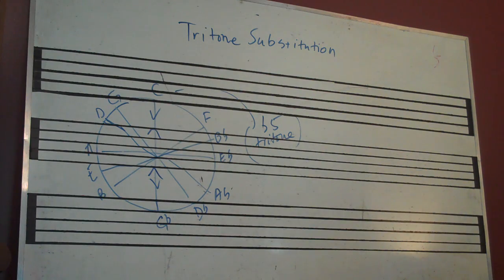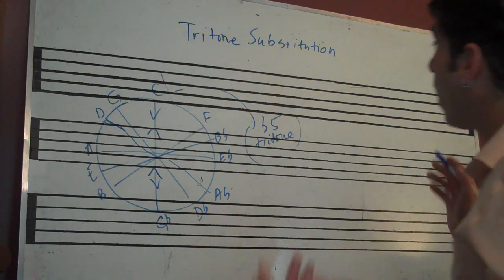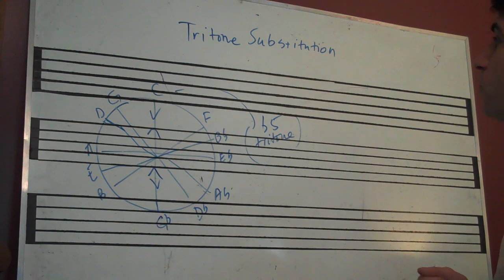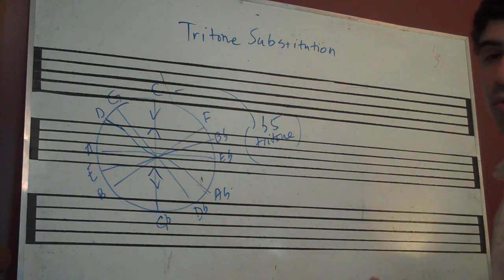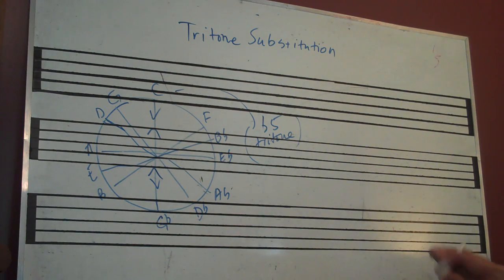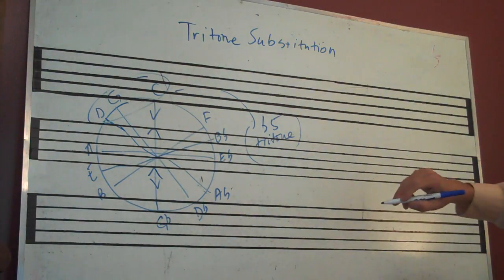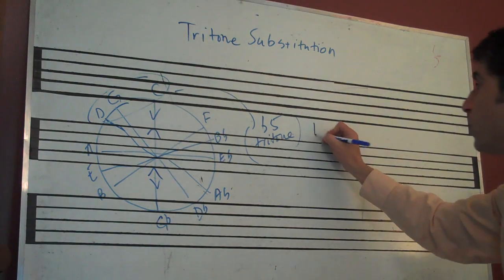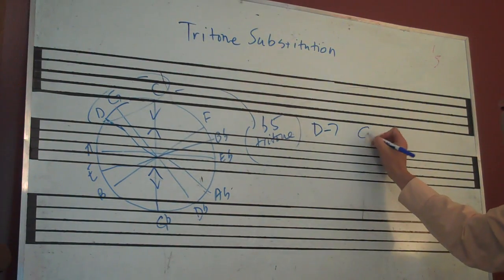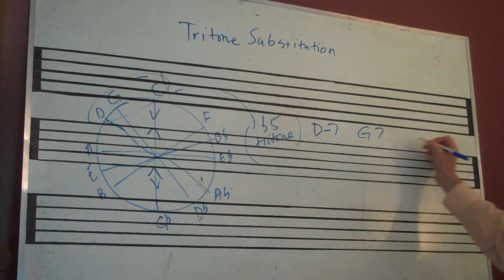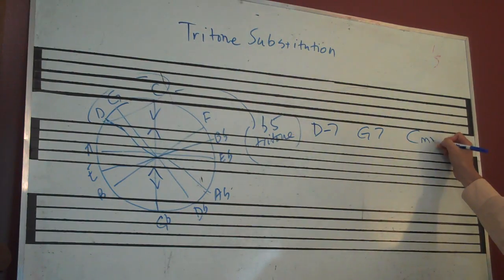If you haven't watched the videos on what a 2-5-1 is, you might go back and watch those before we discuss this. If we are talking about a 2-5-1 in the key of C, it would look like this: D minor 7, G7, to C major 7.